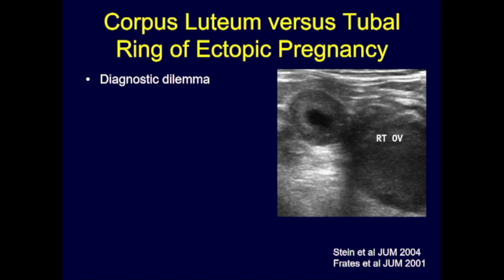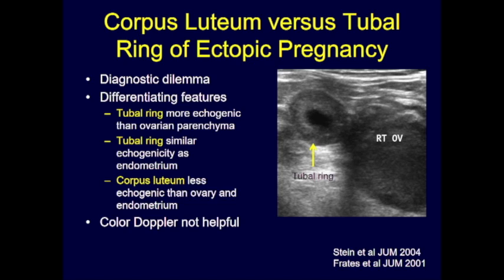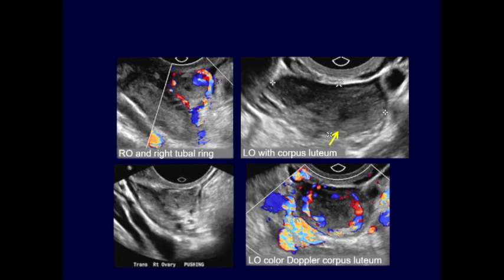How do we differentiate a corpus luteum from the tubal ring of ectopic pregnancy? A tubal ring will appear more echogenic than the ovarian parenchyma — similar in echogenicity to the endometrium — as it is composed of trophoblastic material. The corpus luteum is less echogenic than the ovary and less echogenic than the endometrium. Color Doppler shows a ring of flow in both, so color Doppler is not helpful for differentiation.